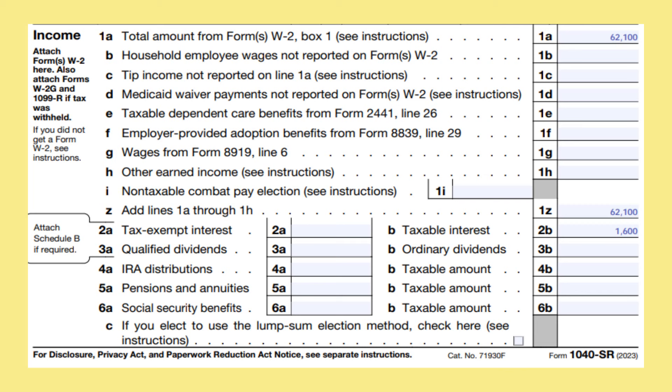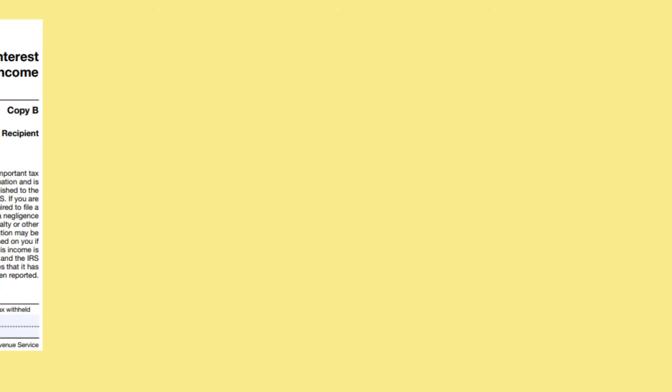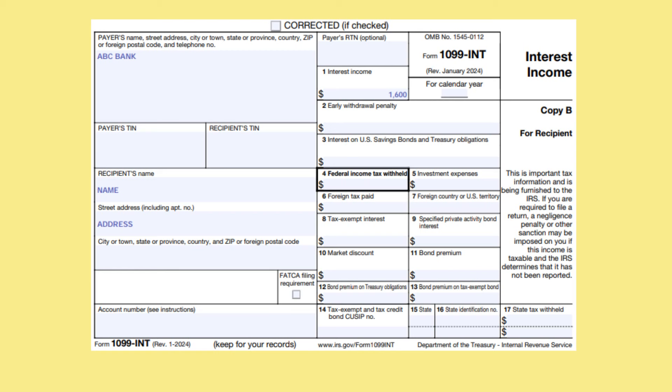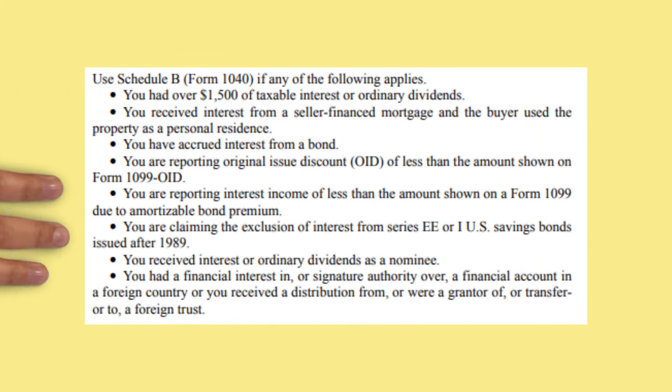On line 1Z, add lines 1A through 1H together to arrive at $62,100. On line 2A, put any tax-exempt interest that you earned. On line 2B, your taxable interest. In our example, you had $1,600 that you earned from a savings account. This was reported to you on Form 1099-INT. Since you had over $1,500 of taxable interest, you must file Schedule B with your 1040-SR.